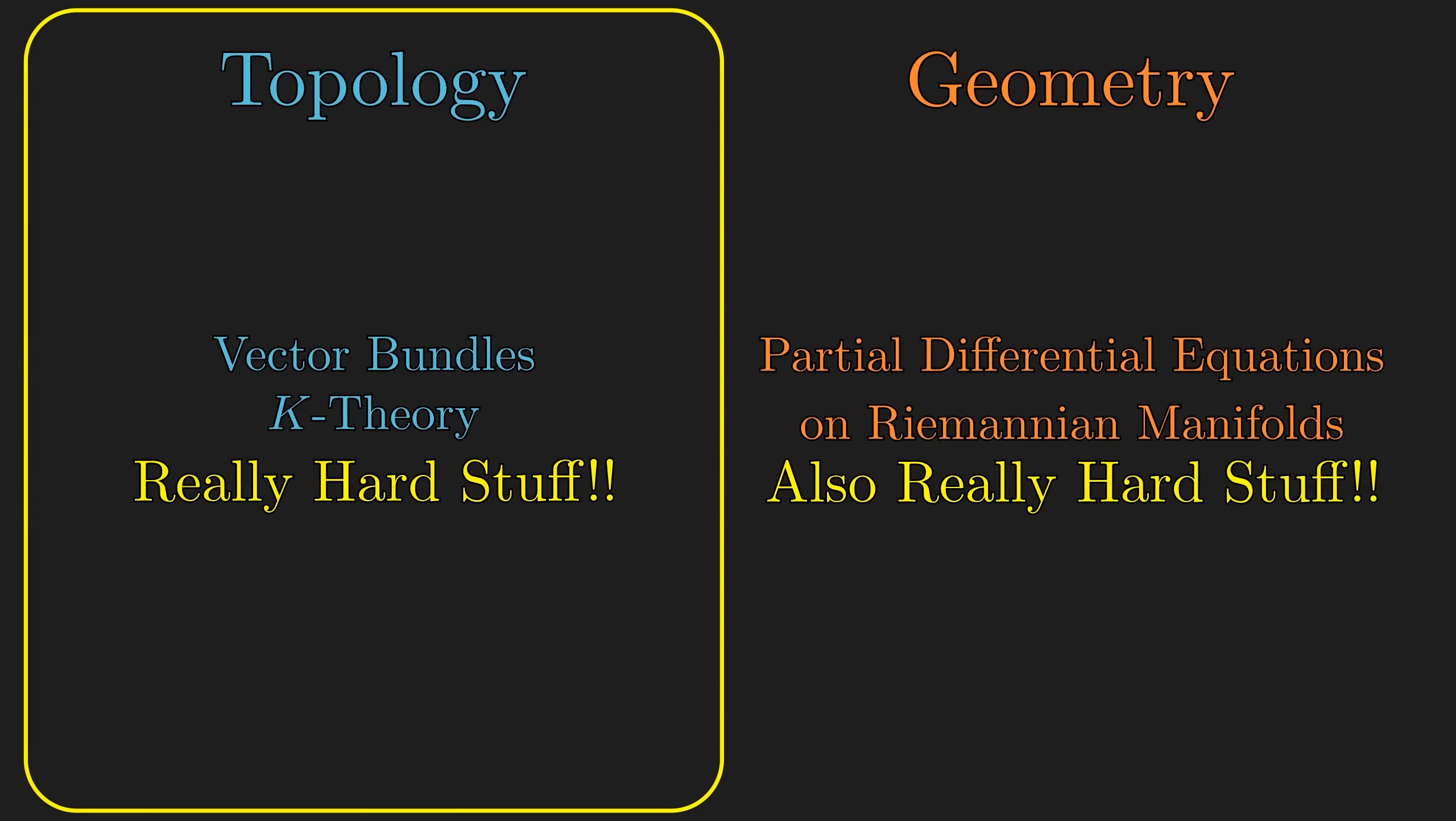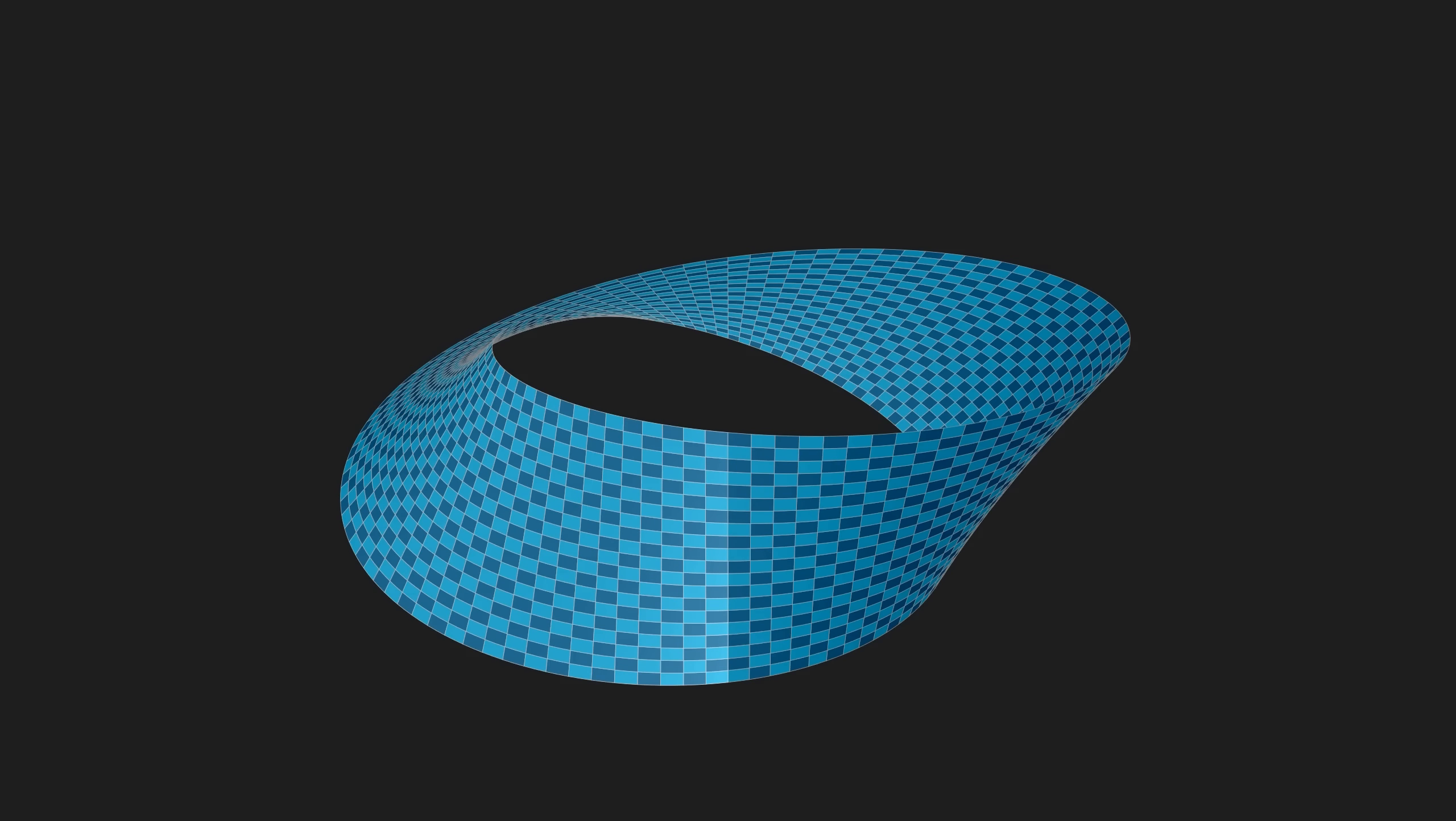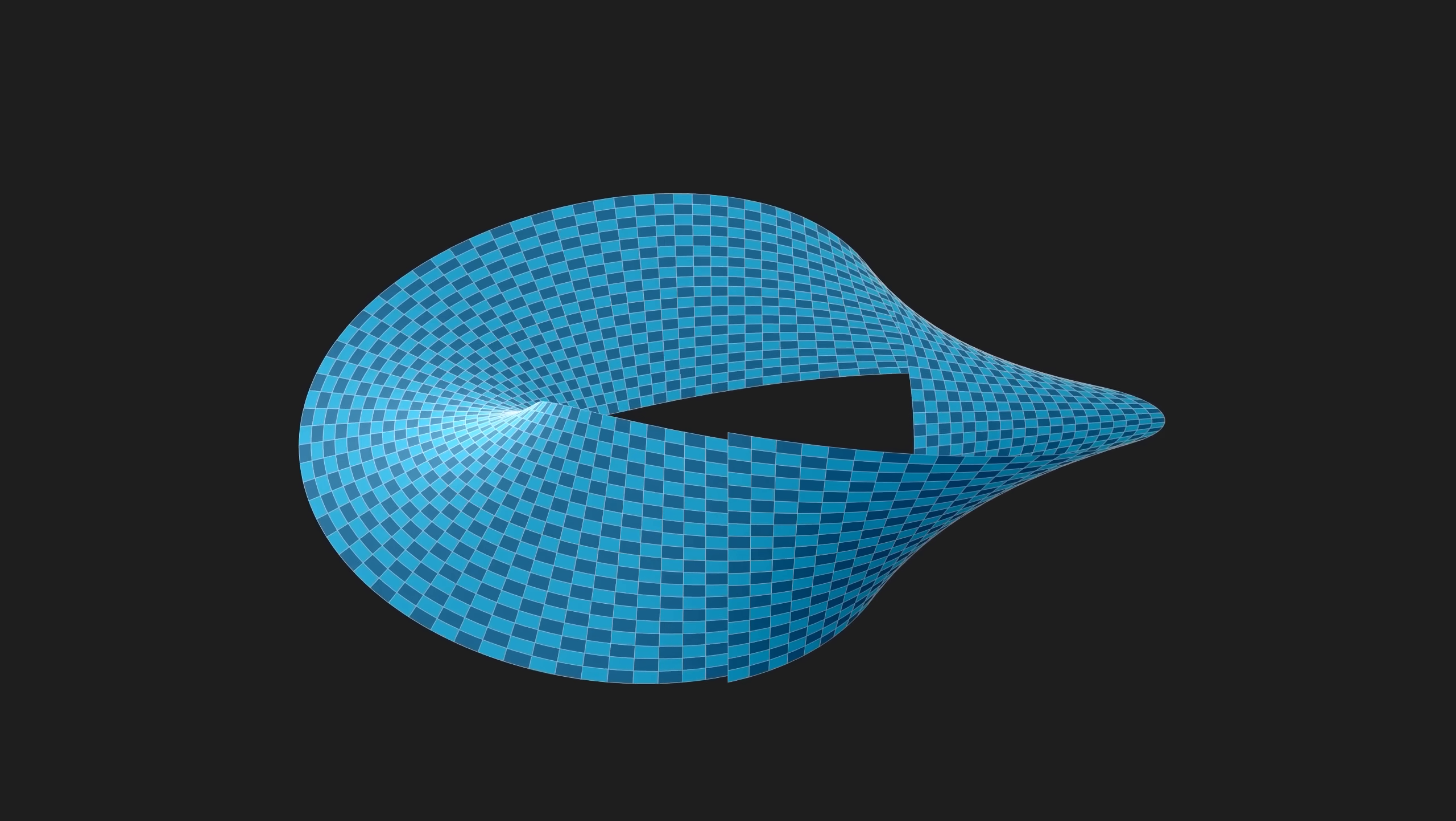So, we will save the geometric part for another day and tackle the topology. In this video, we will mainly focus on the intuition behind this topological twist, and how it prevents the object from existing in lower dimensions.